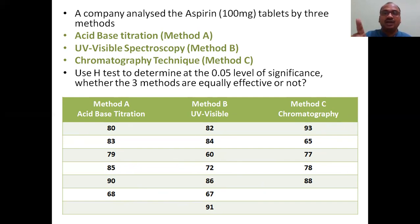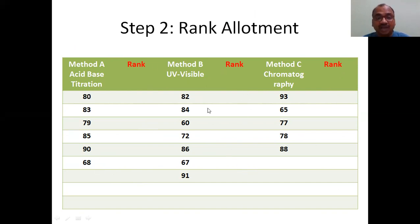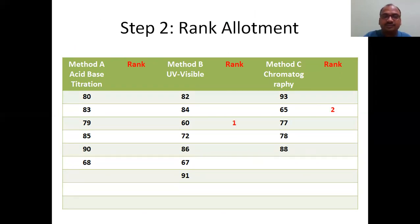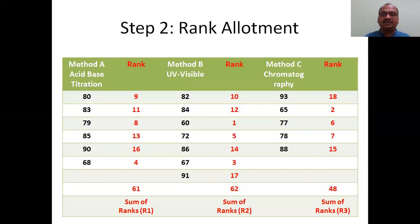What you have to do first is give a rank among all values collectively. Put an extra column for rank in each group. Among all the numbers across the three columns, you have to compare collectively. The first rank goes to the lowest value. The lowest value among all is 60, so I give it rank 1. The next lowest is 65, so I give it rank 2. Like that, you have to allot ranks. I have allotted all the ranks here — you practice.